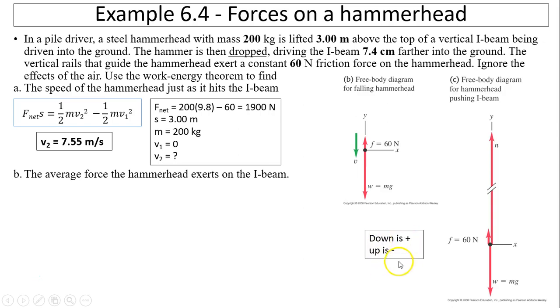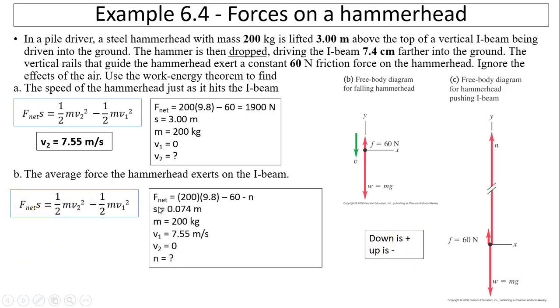And we use, again, down is positive, up is negative. We use the same equation. In this case, F_net would be 200 times 9.8, that's the weight, minus 60 minus N because both 60 and N are upward, which I define as negative.